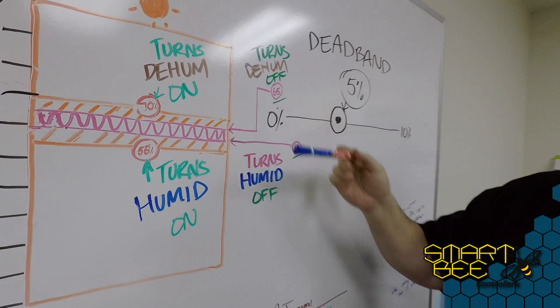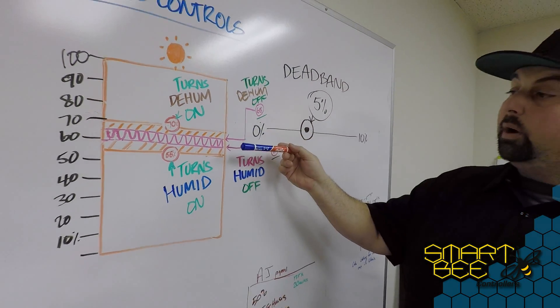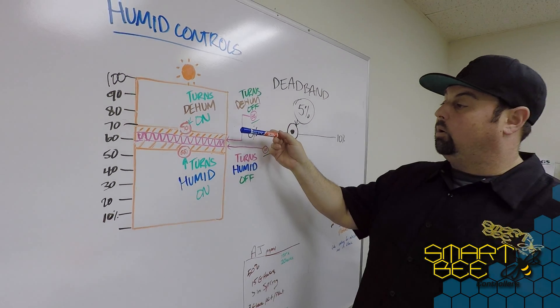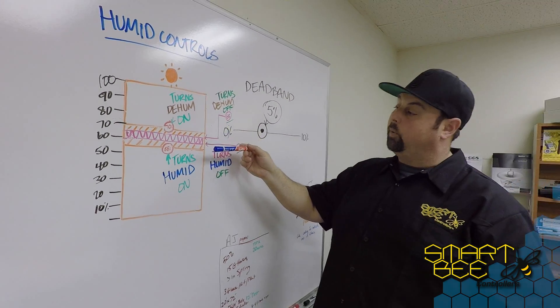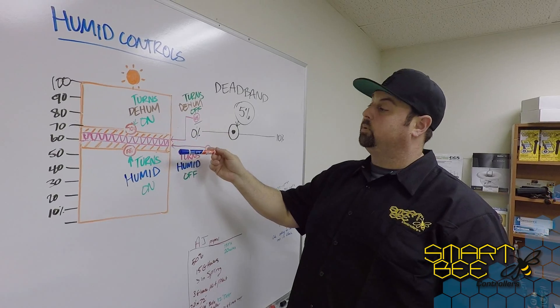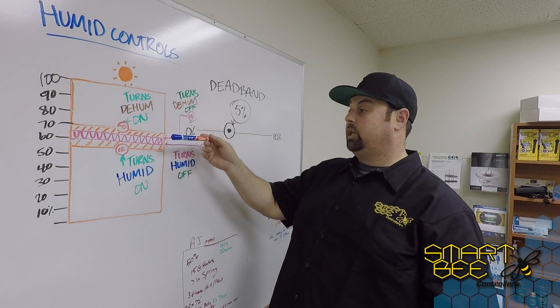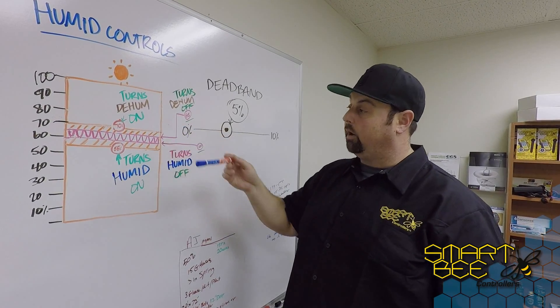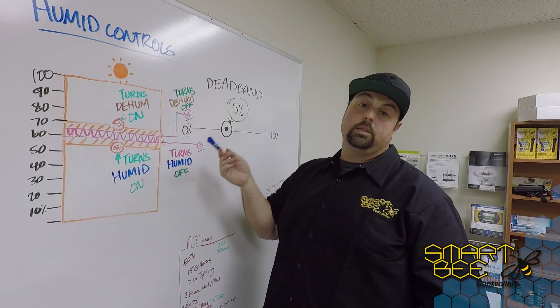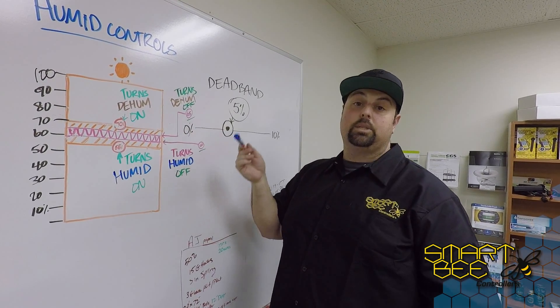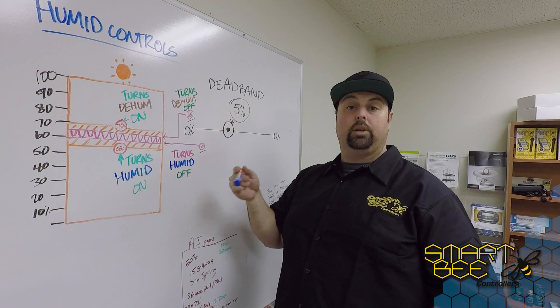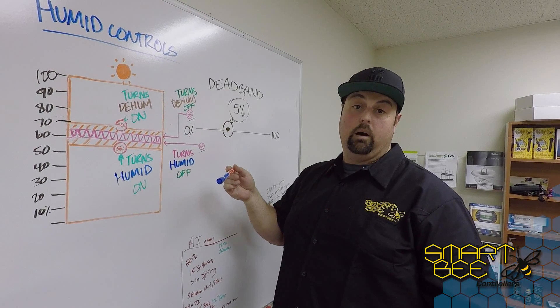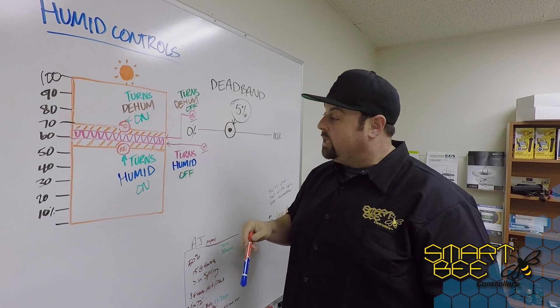This allows you again for a more narrow or wider range of acceptable humidity within your garden, as well as continues to add longevity to your equipment to prevent rapid cycling on and off.